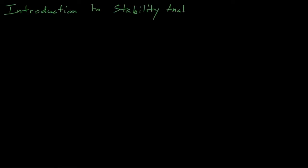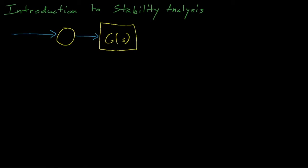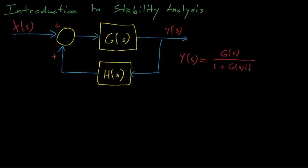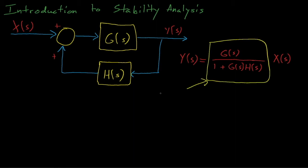Hello everyone, and welcome back to Nuclear Reactor Kinetics and Dynamics Lectures. Previously we have discussed how control block diagrams can be used to model the transient response of systems, and in general we've been looking to obtain an expression for the output of a system, y of s, as a function of its input, x of s, which has generally taken this form for a simple system with a feed forward element g and a feedback element h. The ratio of y of s and x of s, which is equal to this fraction containing g of s and h of s terms, is known as the transfer function for a control system, and it describes how the system will respond to various input signals without having any knowledge of that input signal.